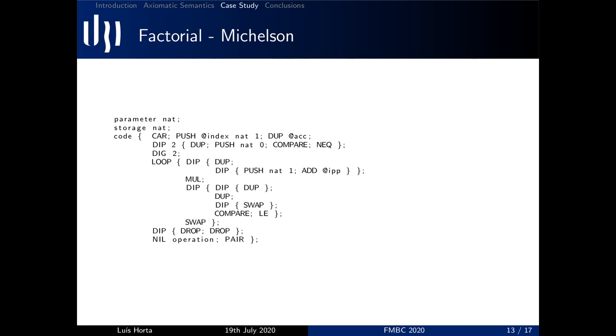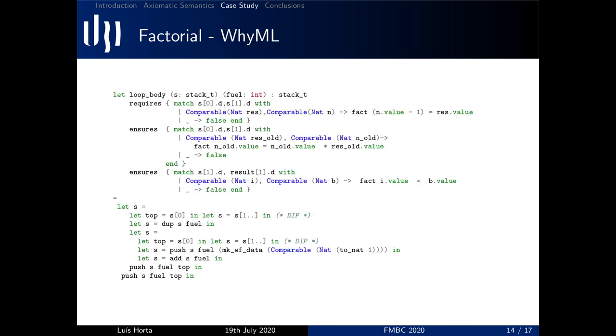This example served as a testbed for our axiomatic semantics and therefore it was manually translated, because our main purpose at this stage was to capture what our semantics could and could not do rather than the automation of the translation mechanism. We are currently working on improving the translation mechanism so that it could split crucial portions of the Michelson construct into separate functions in order to facilitate their proof. As an example of that, let's take a look at this loop body part where the computation of the factorial actually happens.